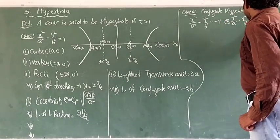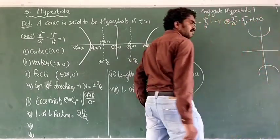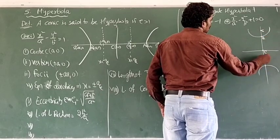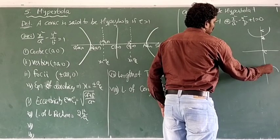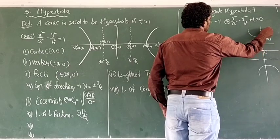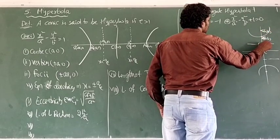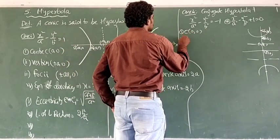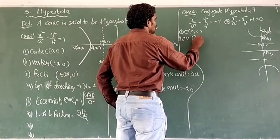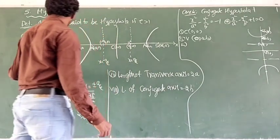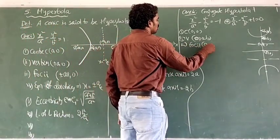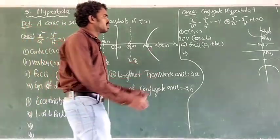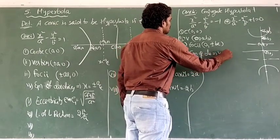For the conjugate hyperbola, the diagram is on the y-axis. Center is (0,0), vertices are (0, ±b), foci are (0, ±be), and the equations of directrices are y = ±b/e. The eccentricity is denoted by E2 or E dash, and is given by √((a²+b²)/b²). E value must be greater than 1 here as well.